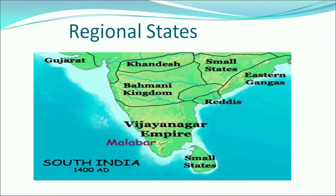The question arises: what are regional states? If you look at the map, you will find many smaller states that existed in India before as well as after the Delhi Sultanate. The present map is of 1400 AD. You can clearly see the Bahmani and the Vijayanagar Empire, which were the two major kingdoms — the regional states of the time. What leads to the emergence of regional states? There can be many reasons.